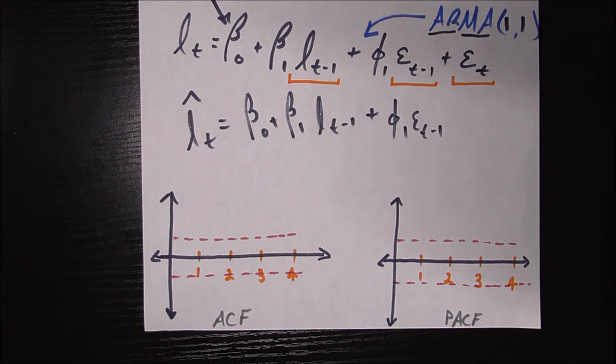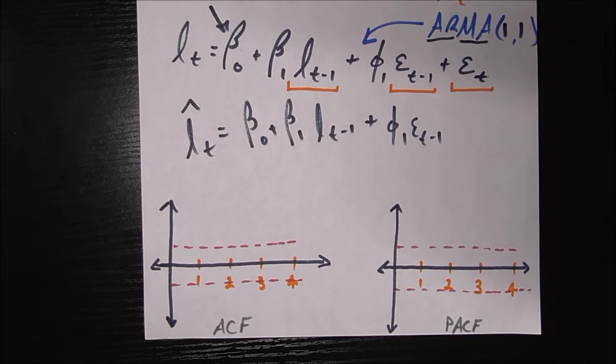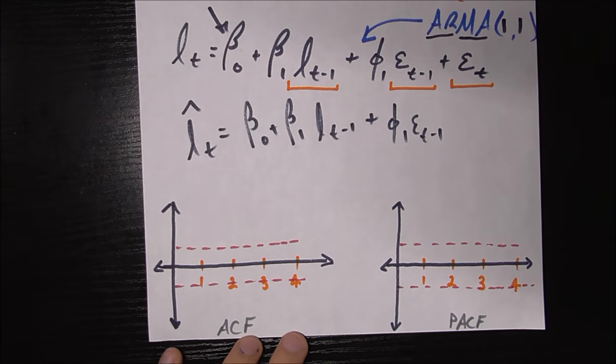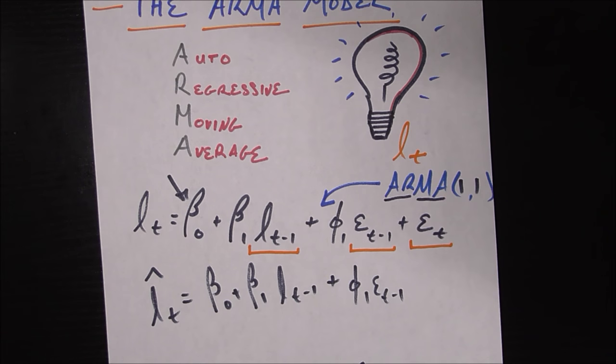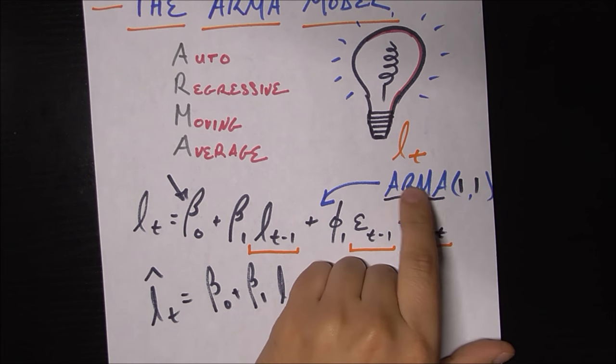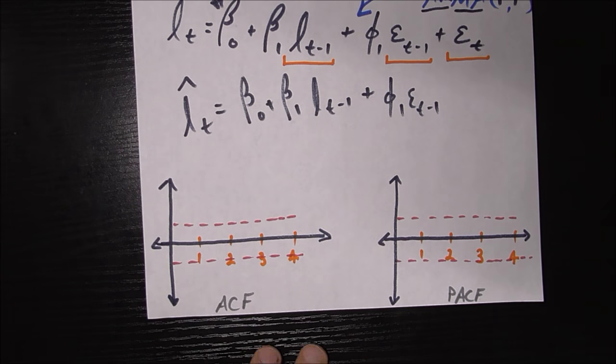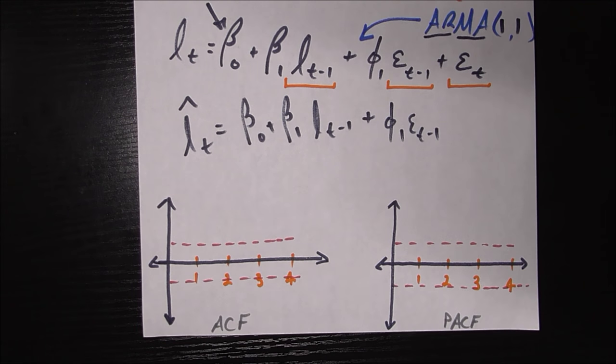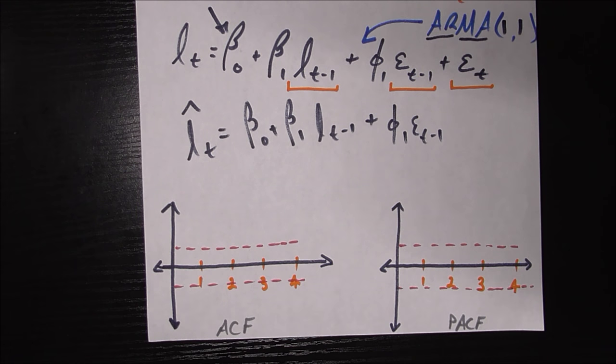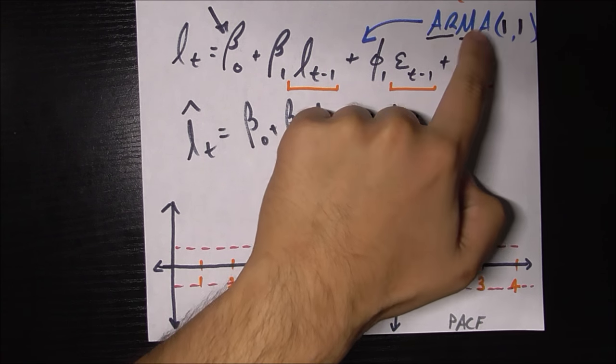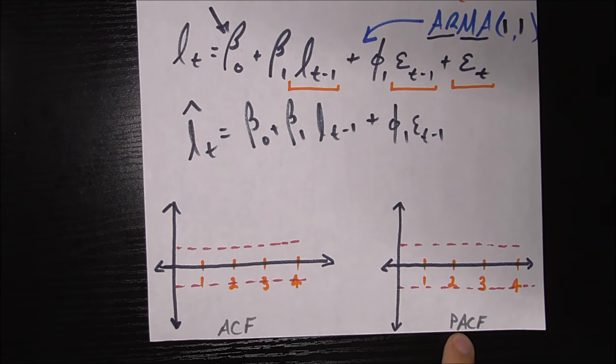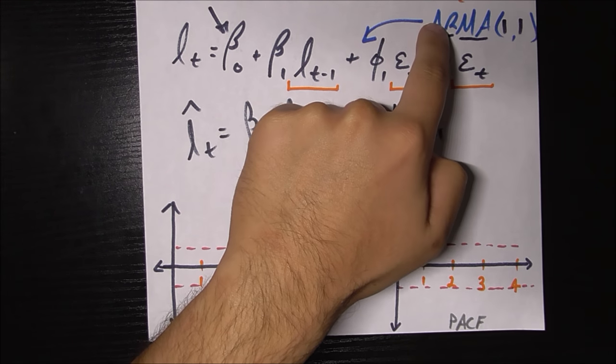To close out this video, if you just see a time series in the wild, you get some data from online or wherever, how do you figure out what order you should set for the AR bit and the MA bit? This is going back to concepts from previous videos on autocorrelation and partial autocorrelation. If you haven't checked out those videos, make sure you give that a watch.